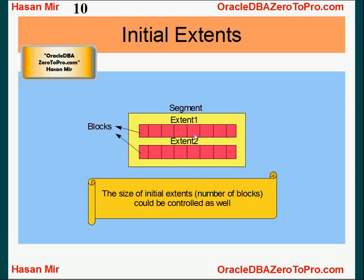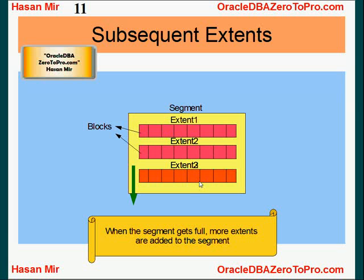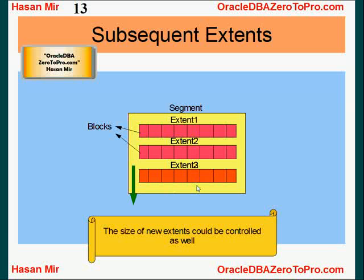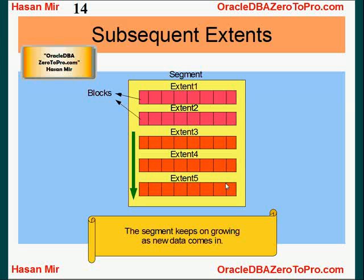Size of extent simply means how many blocks that extent would have within it. When the table gets full, more extents need to be added to the segment. Oracle automatically adds more extents to the segment. The number of extents that are added can be controlled as well — like, when the first extents are fully used, how many extents would be added after that and what would be the size of those new extents. The size of the new extents could be different than the size of the initial extent. So, the segment keeps on growing as new data keeps on coming.